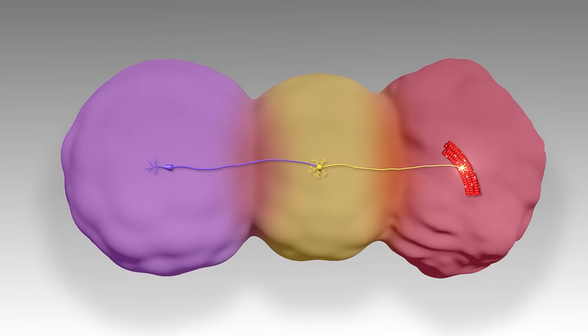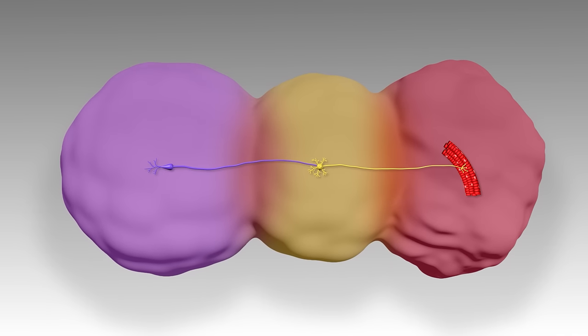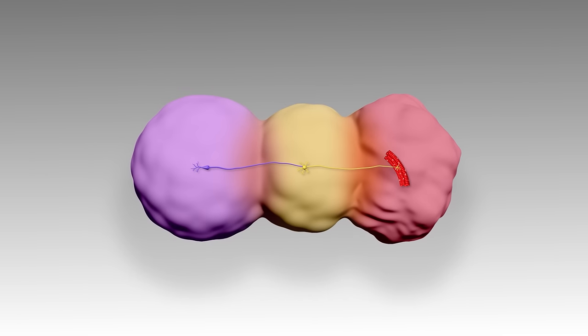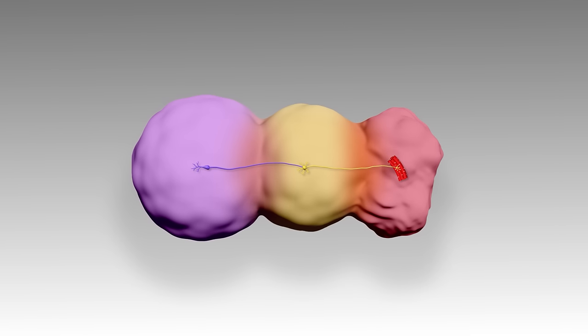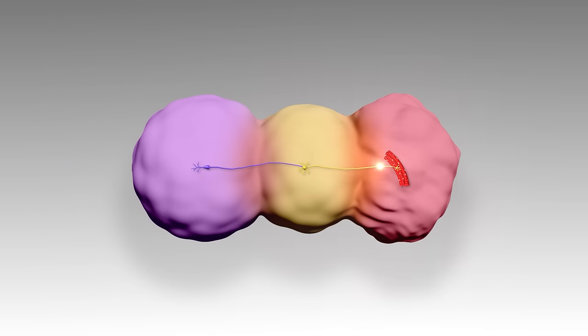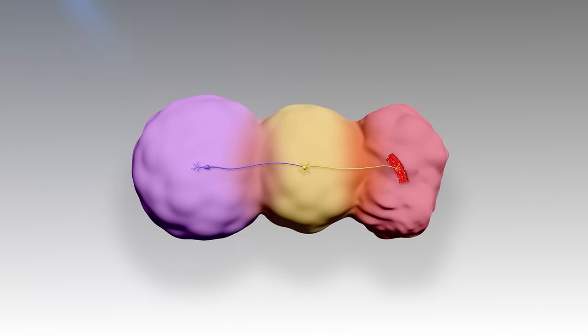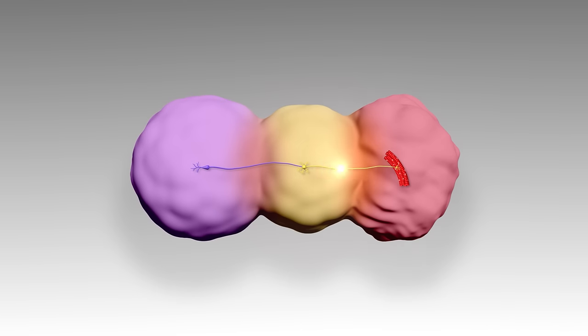But when we applied a stimulus to one part of the assembloid, the cortical organoid, we saw the skeletal muscle contract on the opposite part. We had modeled for the first time a cortical motor pathway from cerebral cortex to spinal cord to muscle.